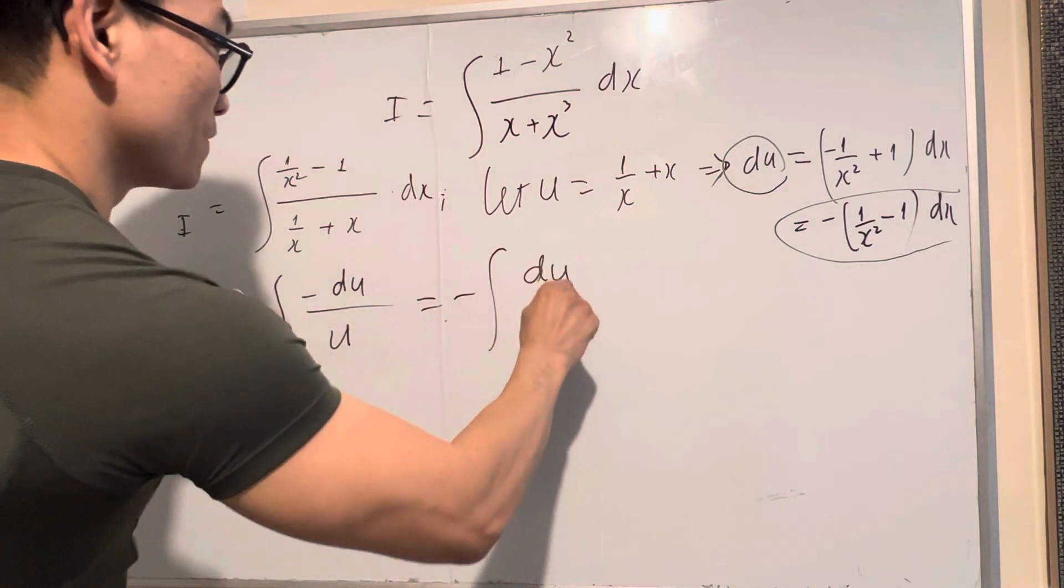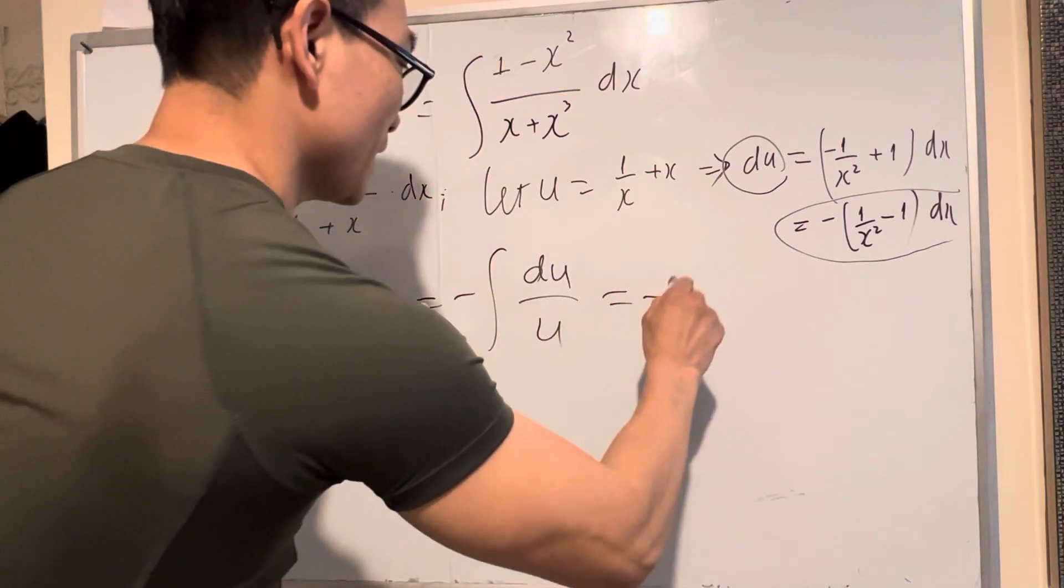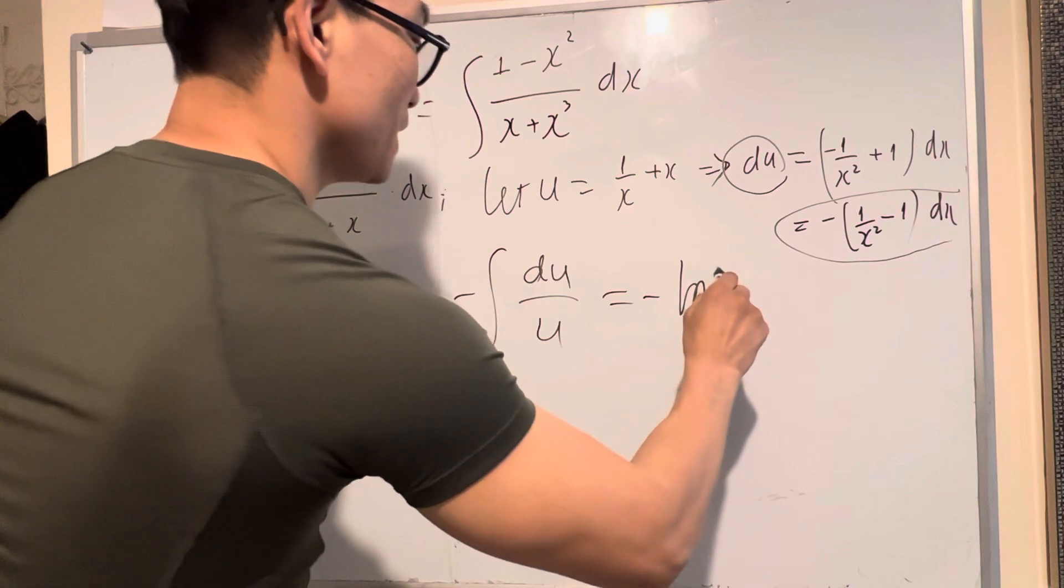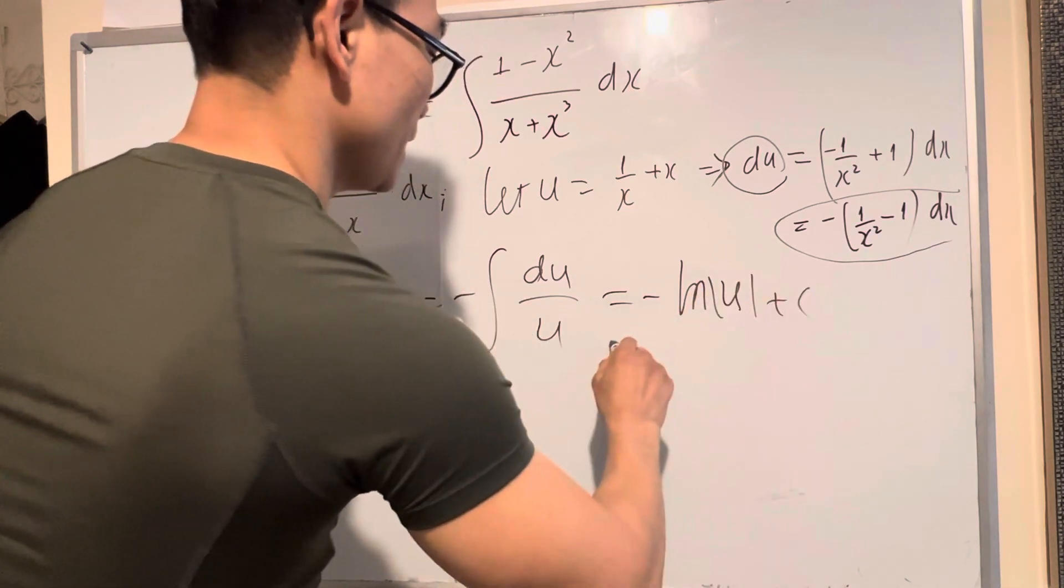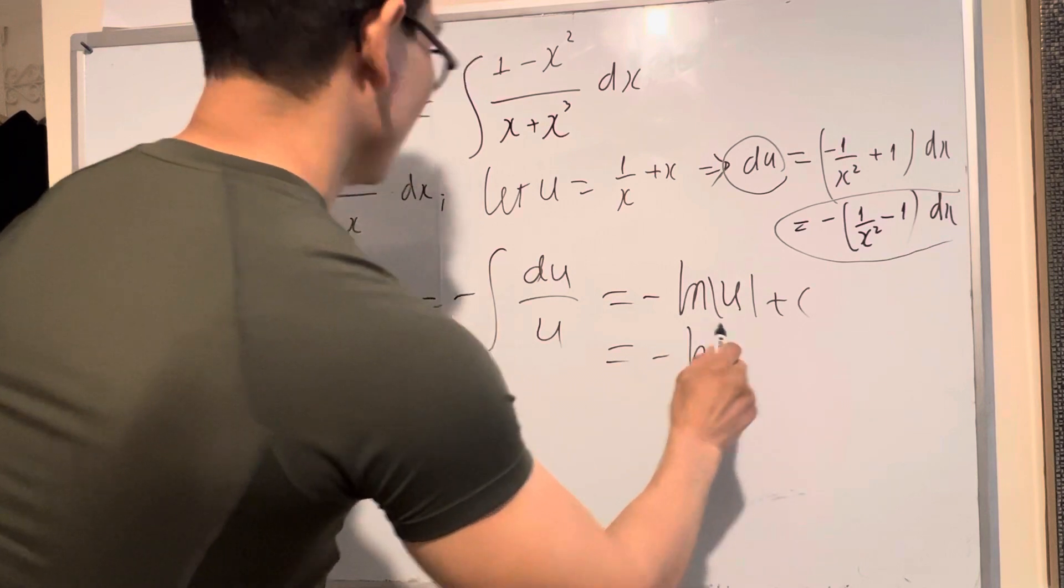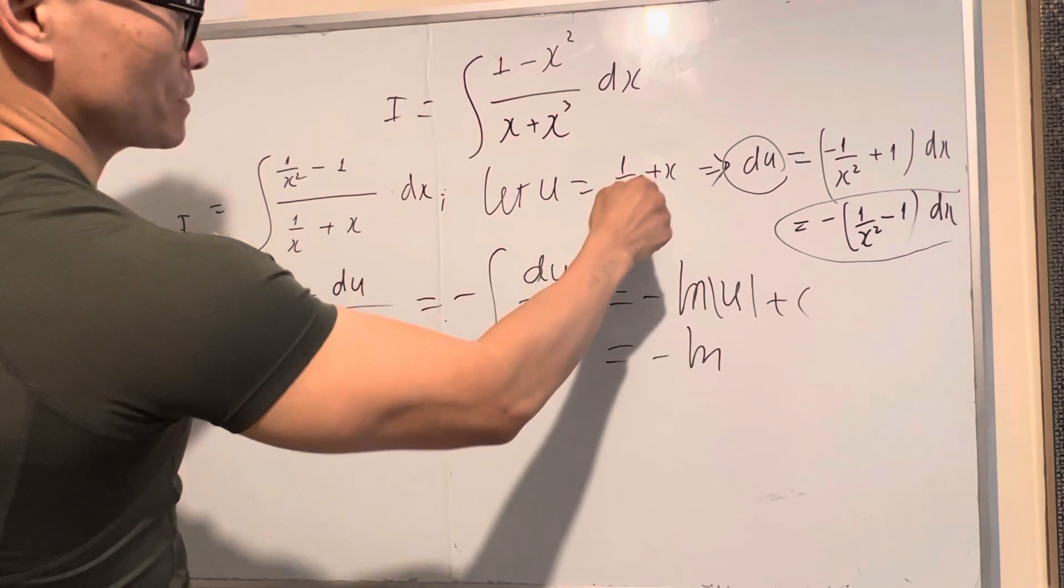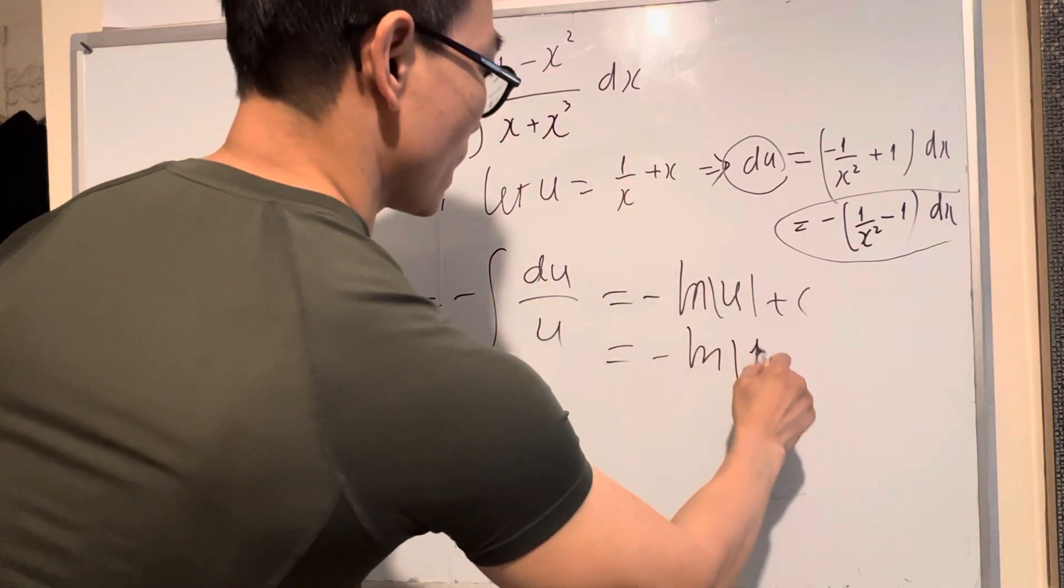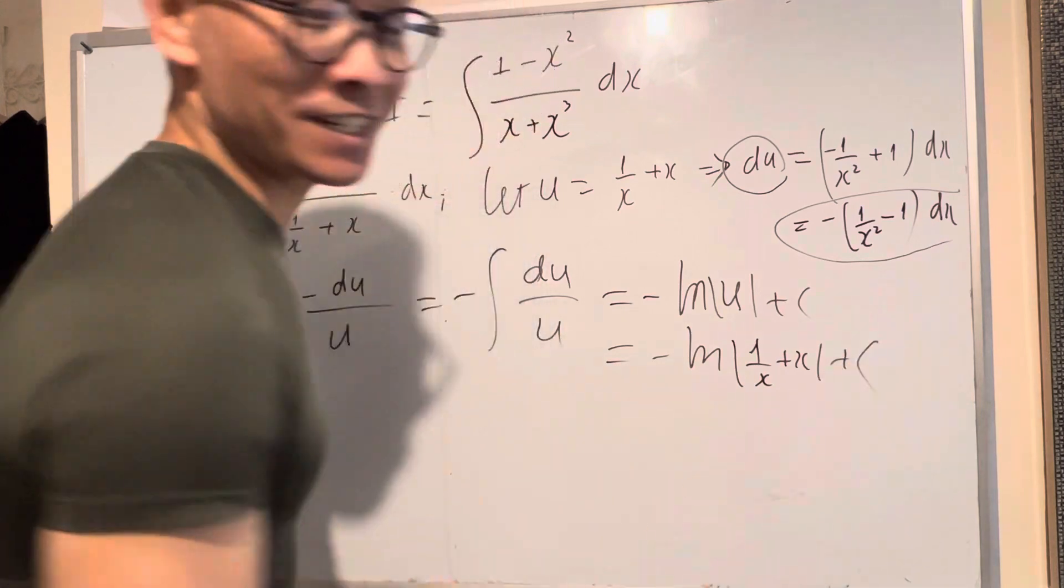You get du over u equals negative ln u plus c. And then u, you put back: u equals 1 over x plus x. So that's negative ln of 1 over x plus x, plus c. That is finished. Thank you for watching.